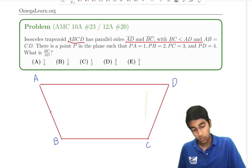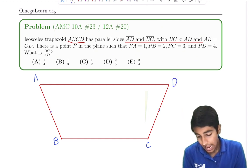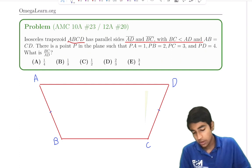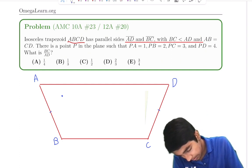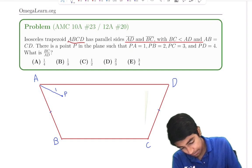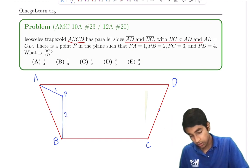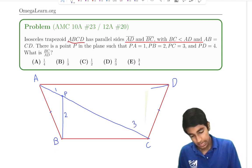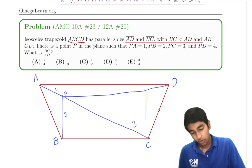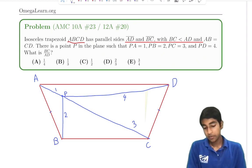And we're given that PA equals 1, PB is 2, PC is 3, and PD is 4. Find BC over AD.